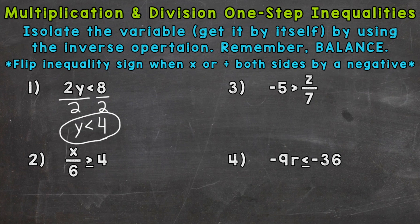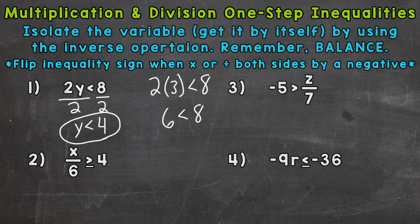Let's test something out. Let's take 3 — 3 is less than 4 — and see if that works. So 2 times 3 is less than 8. Well, 2 times 3 is 6. 6 is less than 8. So 3 is a solution, along with anything else that's less than 4.